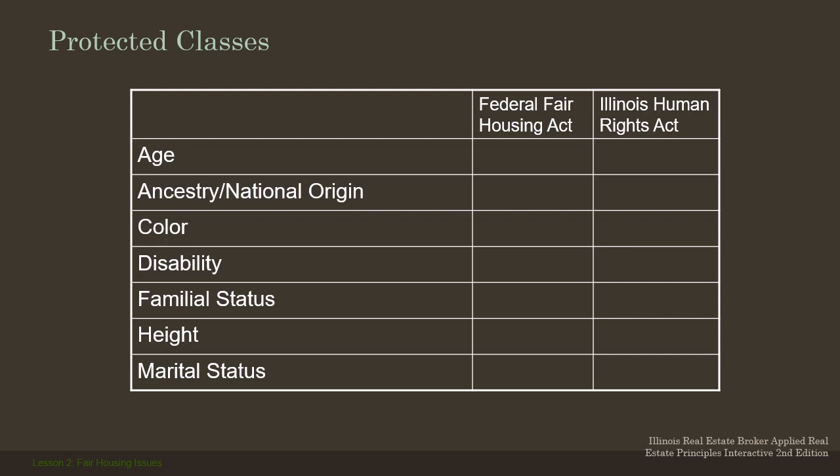Let's quickly review the protected classes. We have our federal Fair Housing protected classes and then those protected under the Illinois Human Rights Act. As counties and cities develop their own fair housing acts, they have to add to the ones already there from federal and state acts — you can't subtract, you can only add. Age is not covered under the federal Fair Housing Act but is covered under the Illinois Human Rights Act, and that is considered age 40 or over. So if you're 40 or over, you can't be discriminated against as you're looking for housing.